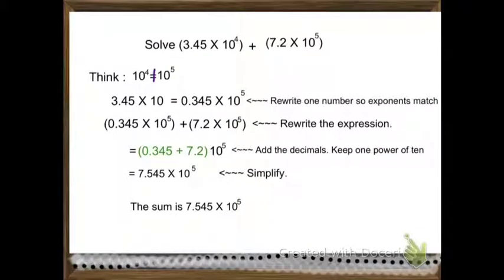Here's another example. Solve 3.45 times 10 to the 4th power plus 7.2 times 10 to the 5th power. Think of it like this: 10 to the 4th power is not equal to 10 to the 5th power, so we rewrite it.